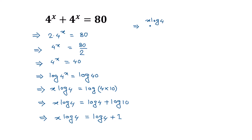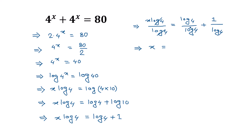So we have x log 4 divided by log 4 is equal to log 4 divided by log 4 plus 1 over log 4. The log 4 and log 4 cancel out, so it remains x is equal to 1 plus 1 over log 4.